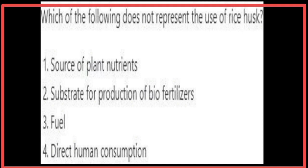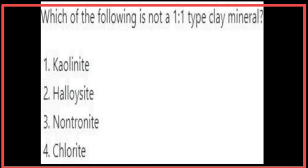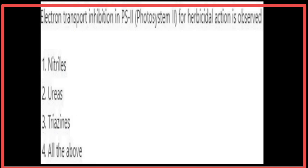Direct human consumption does not represent the use of rice husk. Non-tronite and chlorite are not 1:1 type clay minerals. Electron transport inhibition in Photosystem 2 for herbicidal action is observed in all of the above — that is, nitriles, ureas, and triazines.